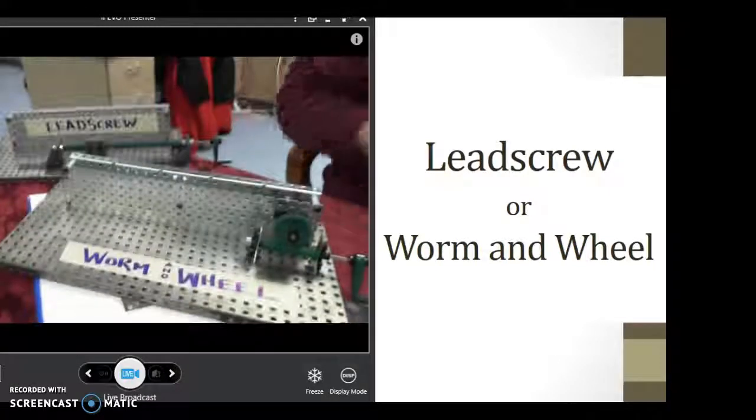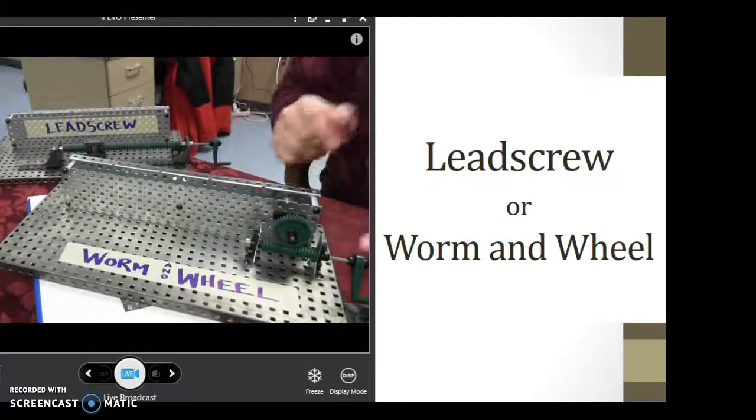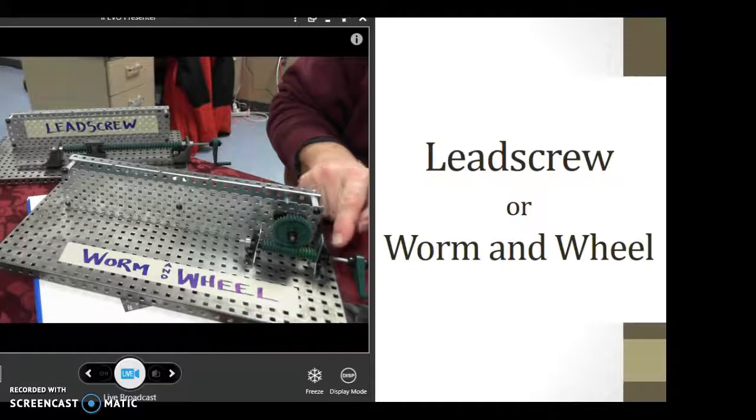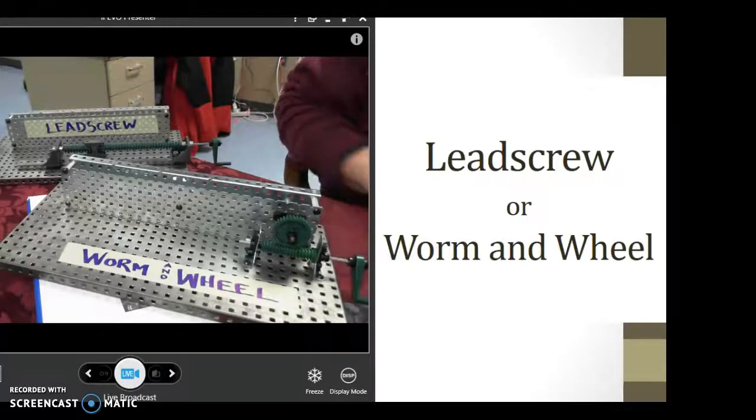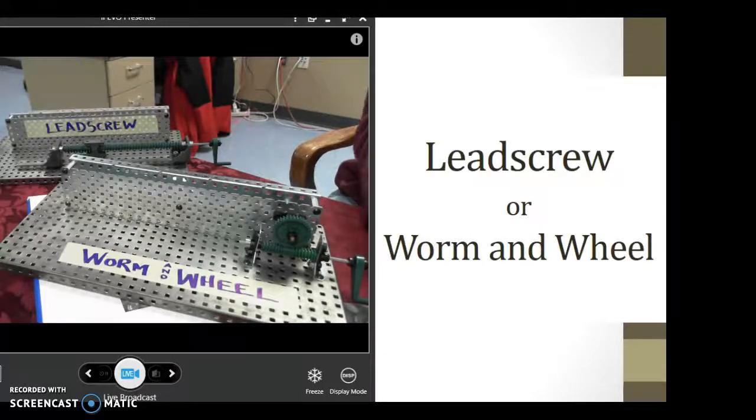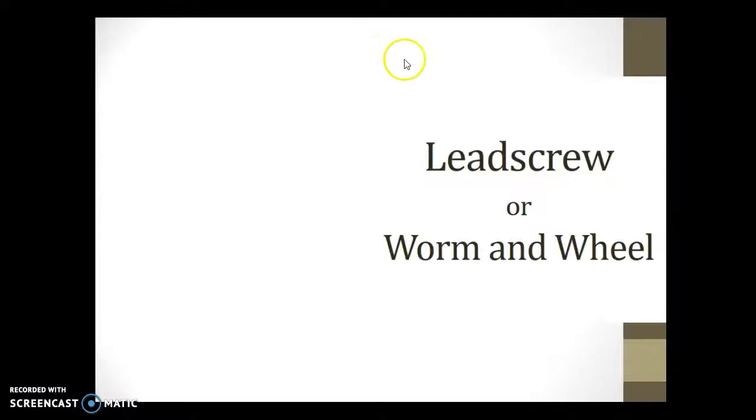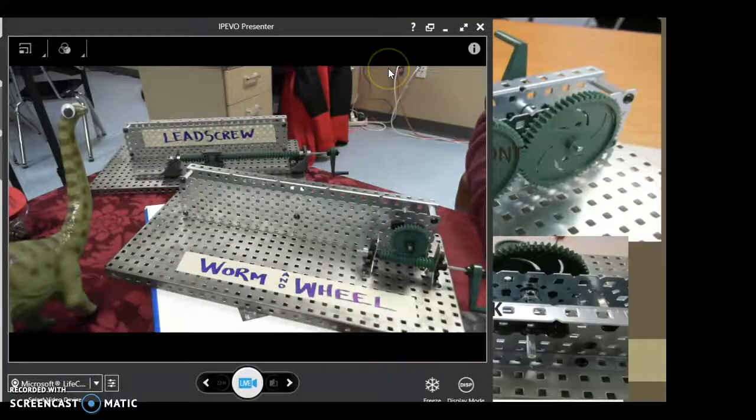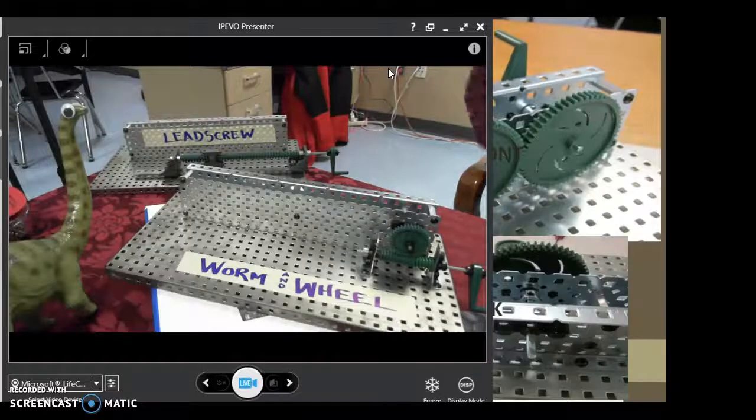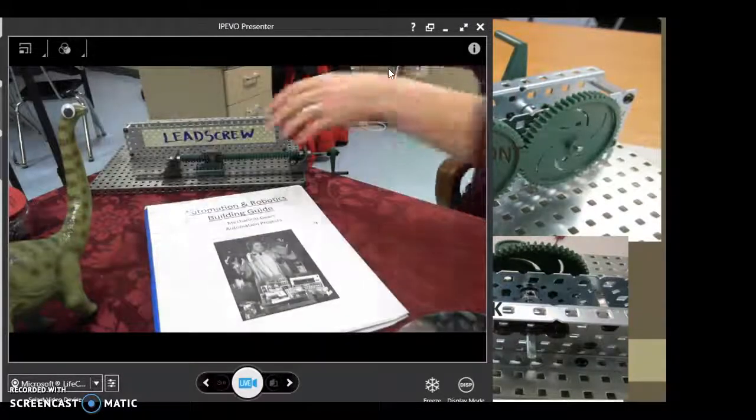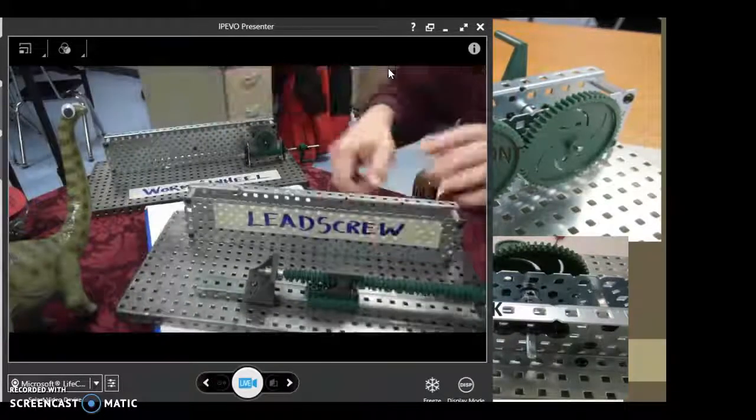This type of gear we're building today, the leadscrew or worm and wheel, that is not the case. You have to have your power flow from the worm gear to whatever is attached to it. So that is our worm and wheel. Now we're going to switch gears and look at the leadscrew and see how that's a little bit different.